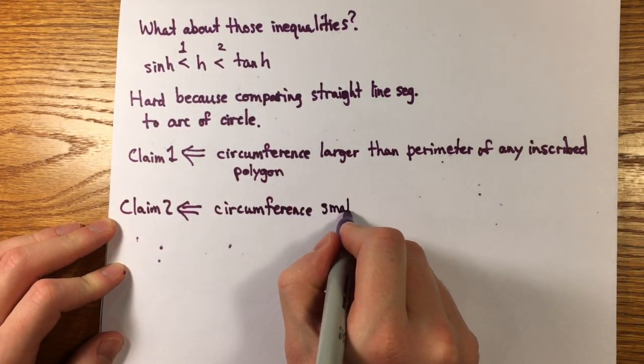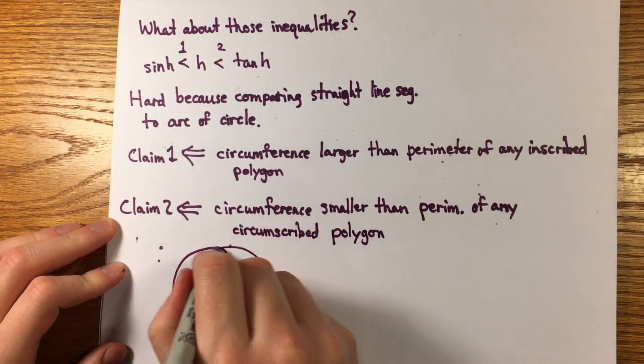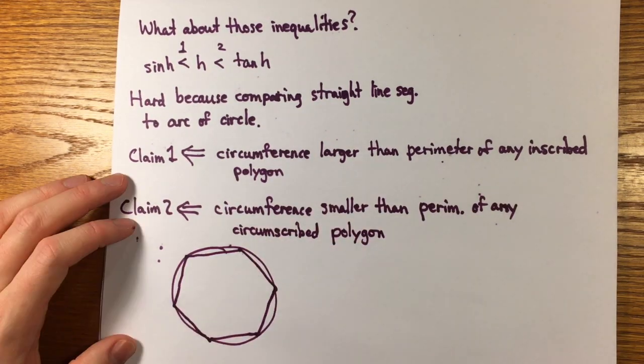I wrote the symbol for is implied by, but they're equivalent. Here's a picture of a circle with an inscribed and a circumscribed polygon. Both of these theorems were proven by Archimedes. They're important, but almost never proven in a calculus class.